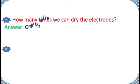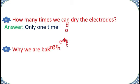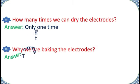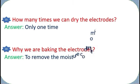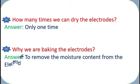How many times can we dry the electrodes? Answer: Only one time. Why we are baking the electrodes? Answer: To remove the moisture content from the electrodes.